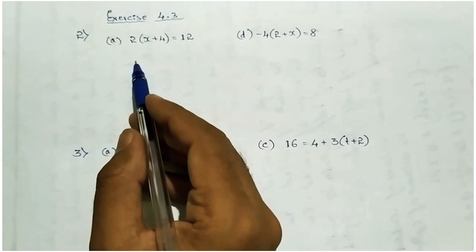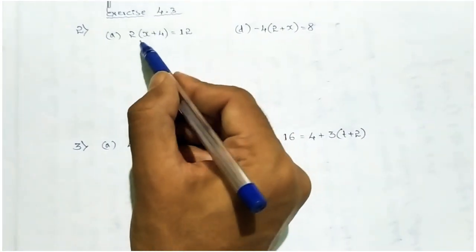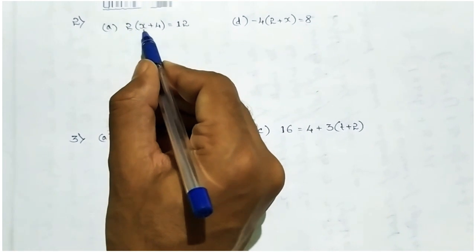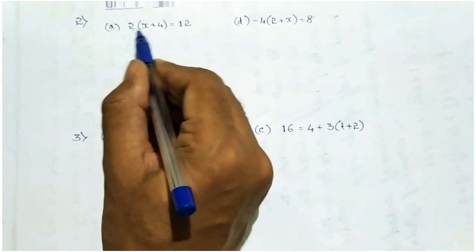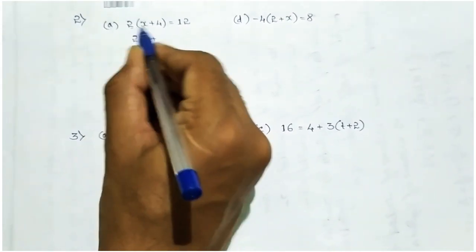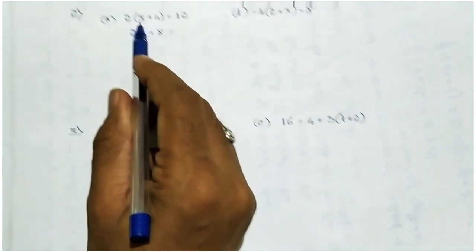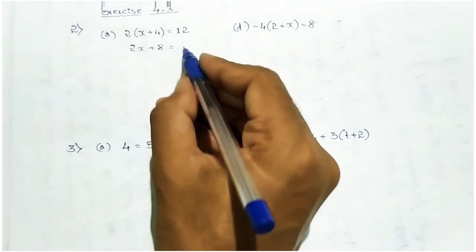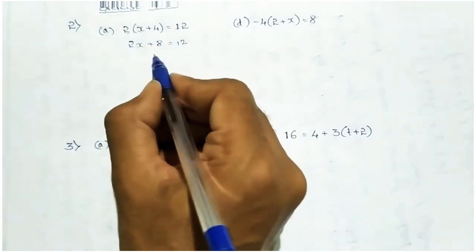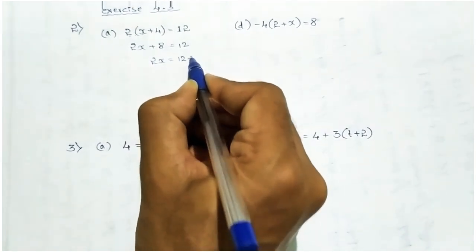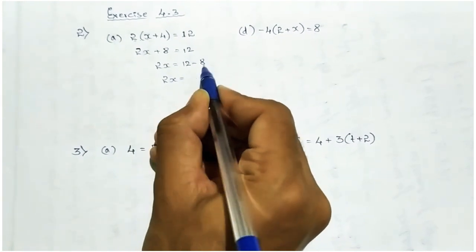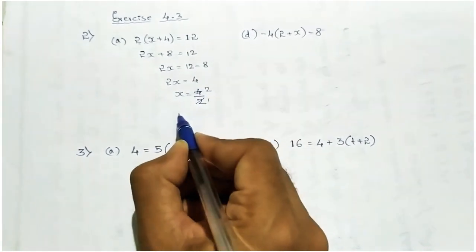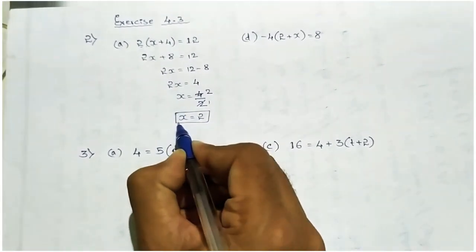In second main, variables are in brackets. Bracket means you must multiply the number outside with everything inside if there is no sign between them. Here: 2 of x plus 4 equal to 12. Open the bracket: 2 into x is 2x, plus 2 into 4 is 8. So 2x plus 8 equal to 12. Take 8 to the right side: 2x equal to 12 minus 8, which is 4. So x equal to 4 by 2, giving x equal to 2.